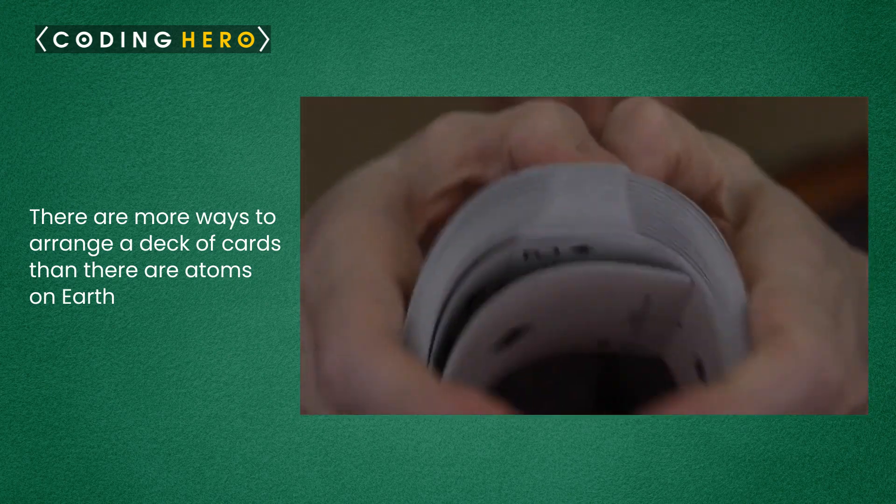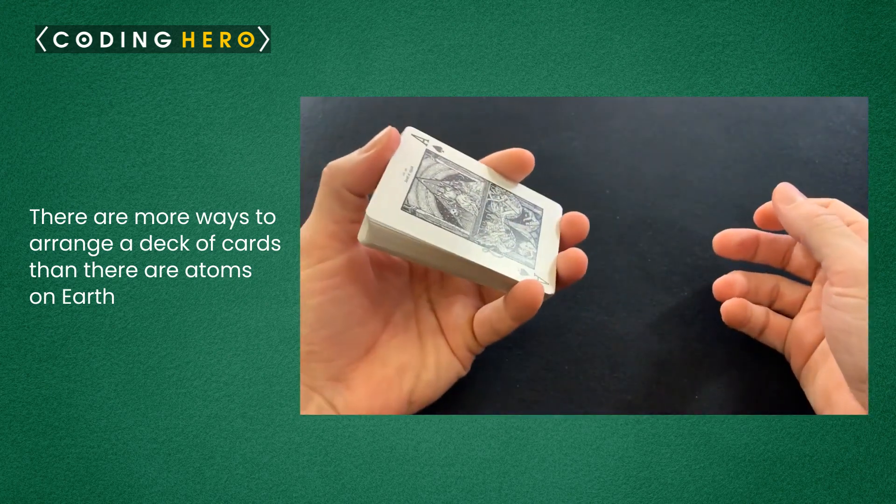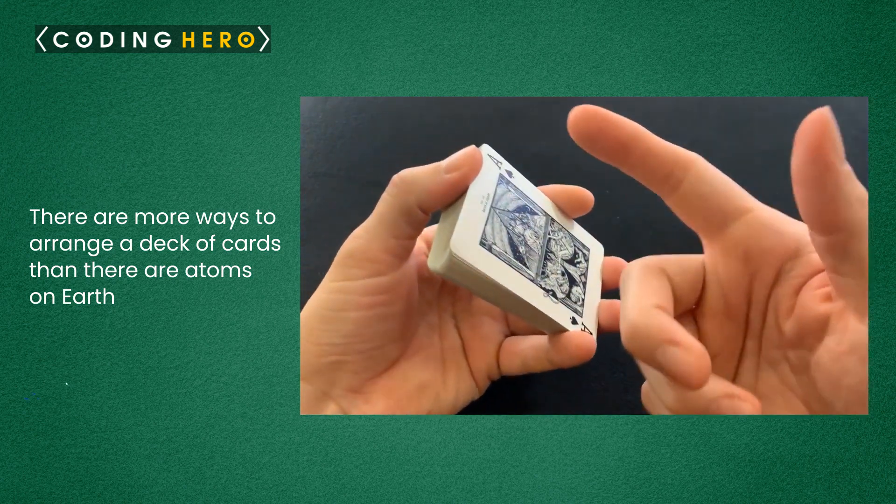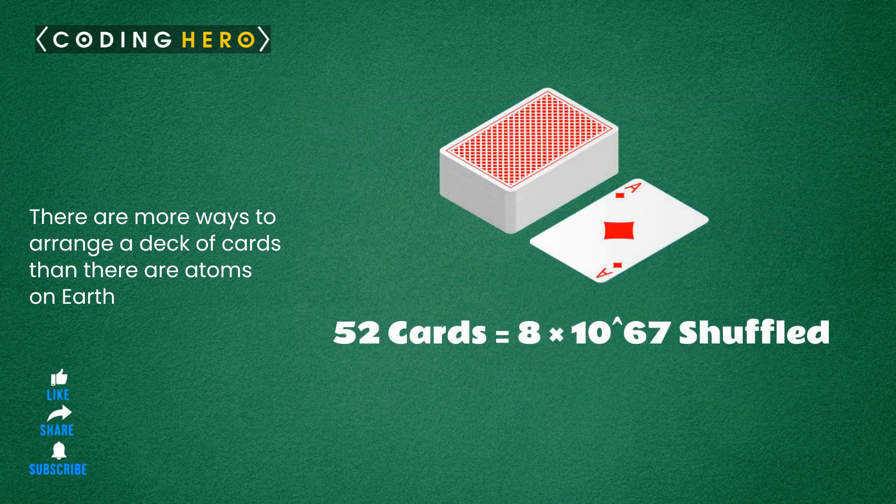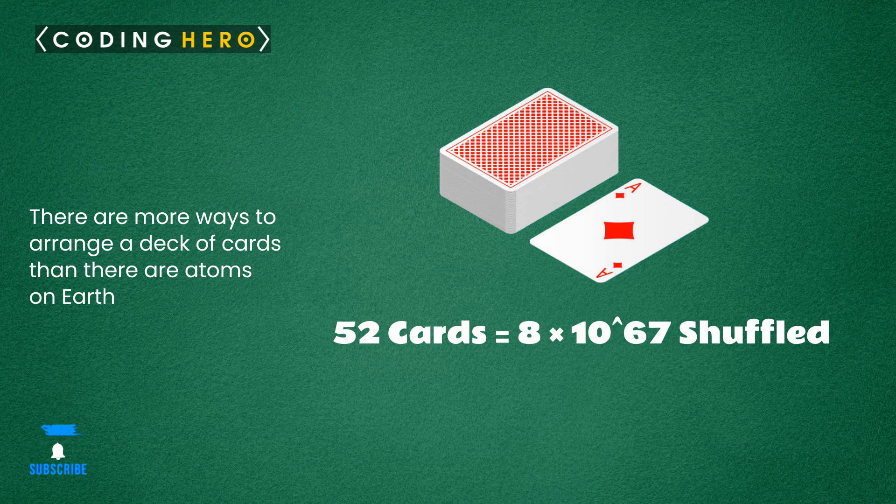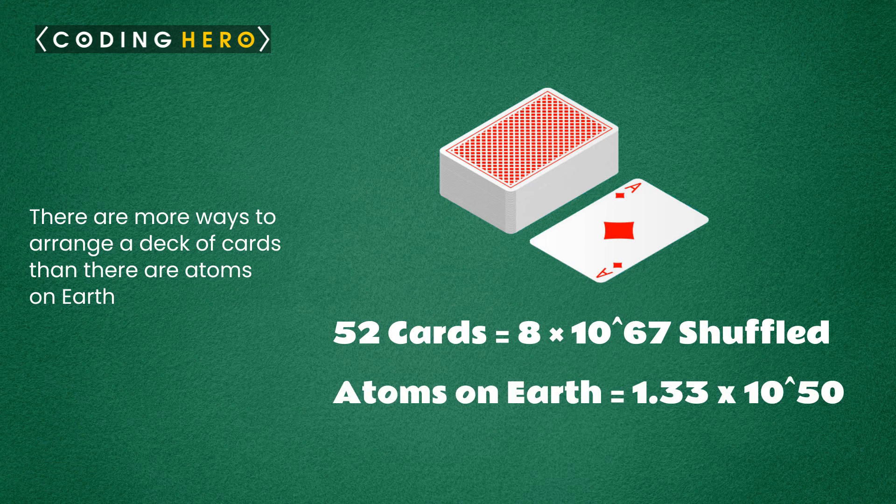If you shuffle a deck of cards, it's likely that exact order never existed before in the history of the universe. A deck of 52 cards can be shuffled in 8 x 10 to the power 67 ways, and the number of atoms on earth is 1.3 x 10 to the power 50.